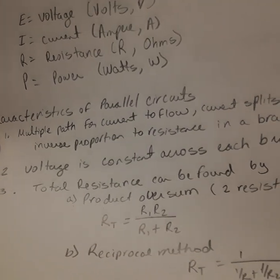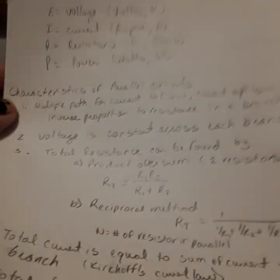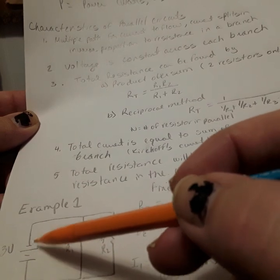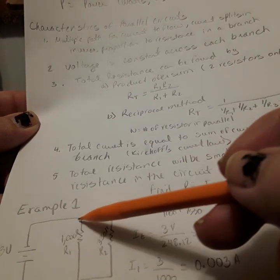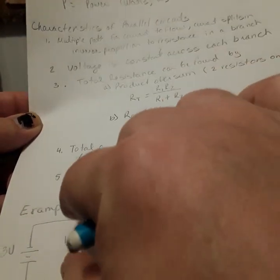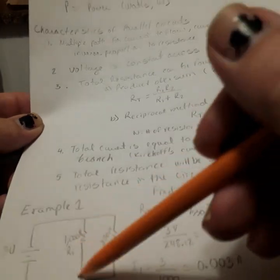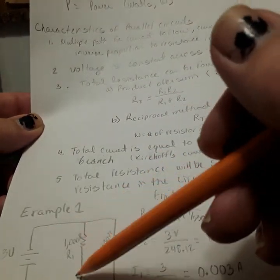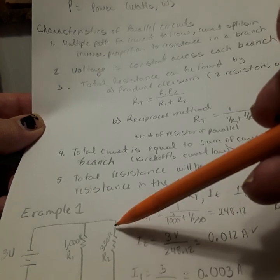Two, voltage is constant across each branch. We know that in here, the voltage across this complete circuit, if we look at these two points, is 3 volts. So this branch is going to have 3 volts, and this branch is going to have 3 volts.